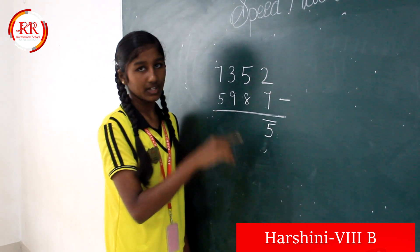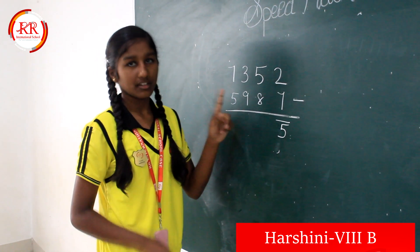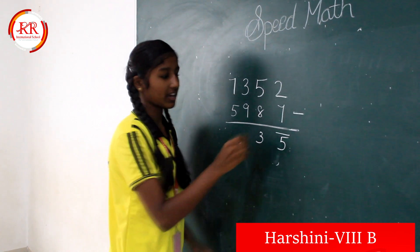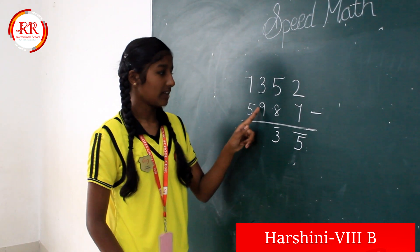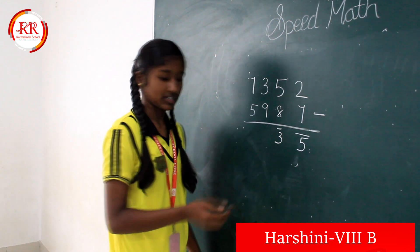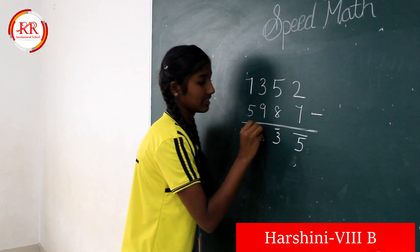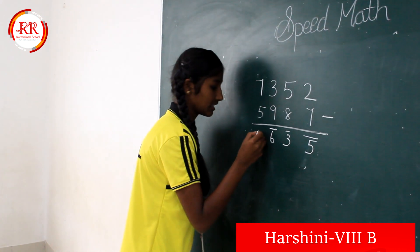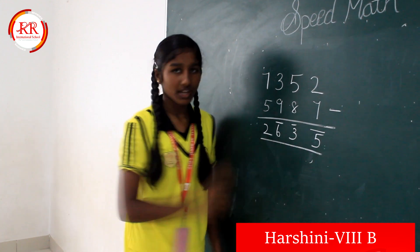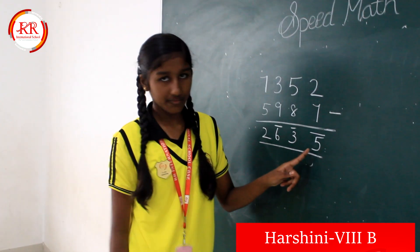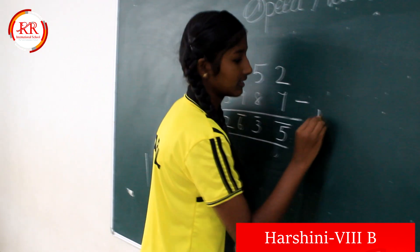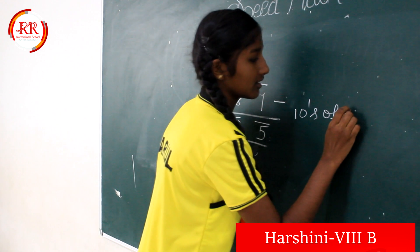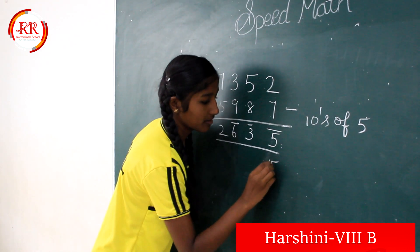This bar is called Winkula. Next, 5 minus 8 — we are going to take reverse subtraction, then it will be 3. Then again you should keep a bar. Next, 9 minus 3, reverse subtraction, then it will be 6. Bar. Next, 7 minus 1, normal subtraction — it is 2. If we are having a bar number, we should take the 10th complement. The 10th complement of 5 is 5. Now we should write 5 here.